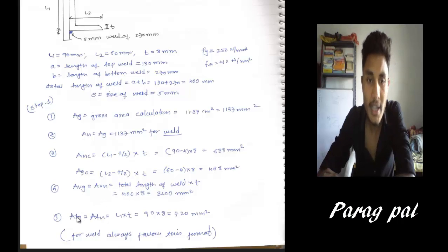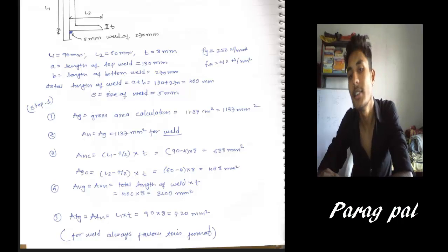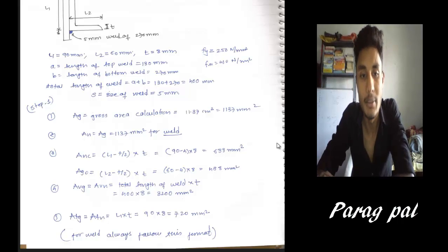Similarly, Avg, Avn and Atg, Atn are having this formula: total length into weld into T. Total length of weld multiply by T, so you get this value. Same is Atn, L1 into T. So you get this value. So these are the easier way in welding.